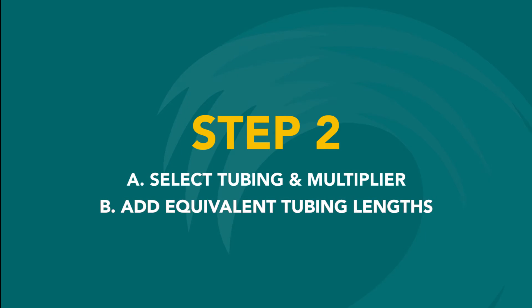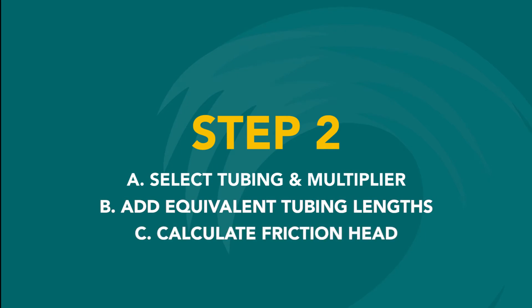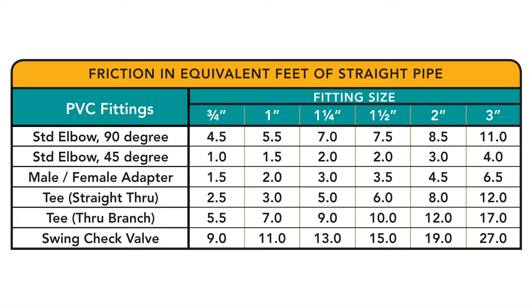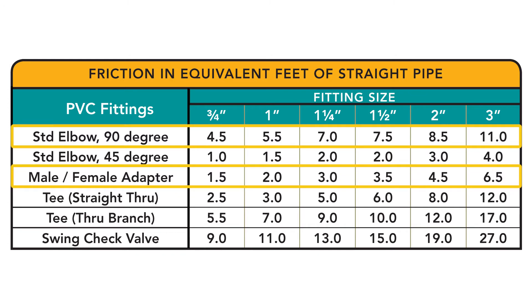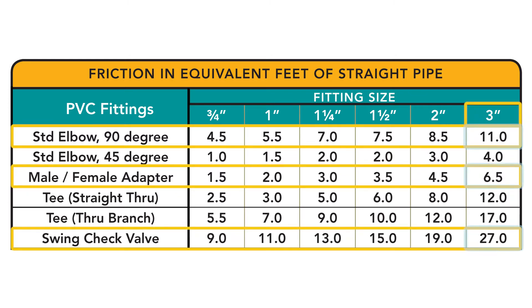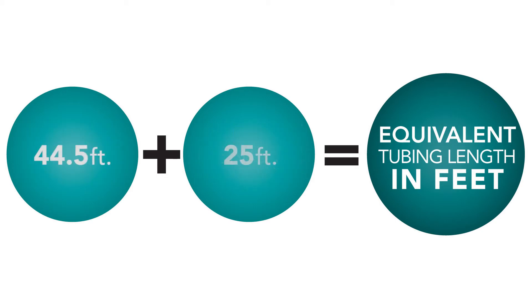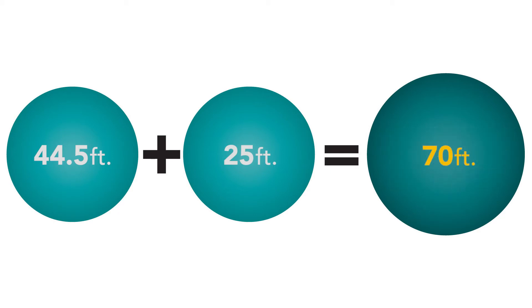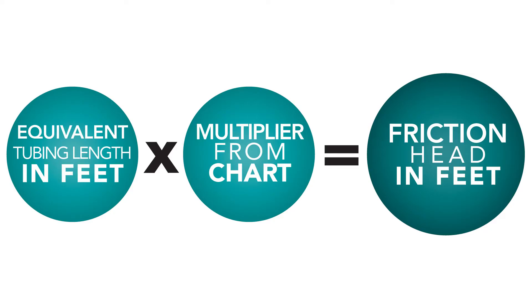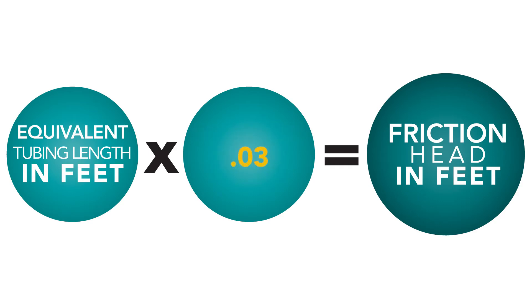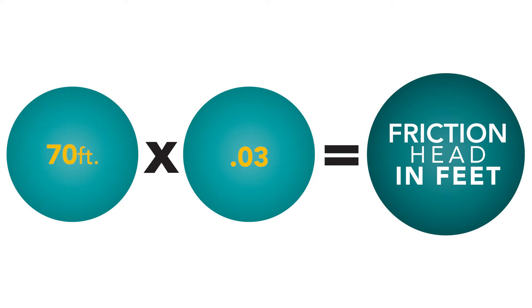Next, we'll add up the equivalent friction loss for our fittings from the friction in equivalent feet of straight pipe chart, and calculate the friction head. If our system requires one 90-degree elbow, one male-female adapter, and one check valve, all 3-inch in diameter, we add together 11, 6.5, and 27, totaling 44.5 feet of equivalent length. Add that to the original tubing length of 25 feet and round up to find a total equivalent length of 70 feet. Multiplying 70 feet by our multiplier of 0.03, the friction head in the tubing and fittings is approximately 2 feet.